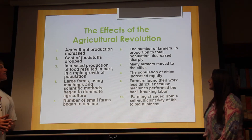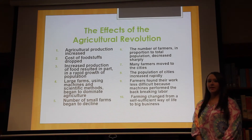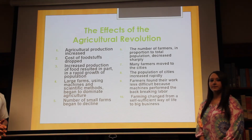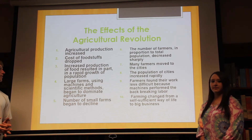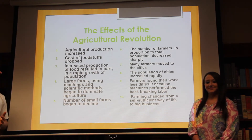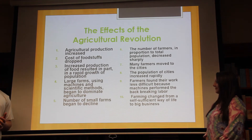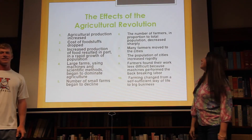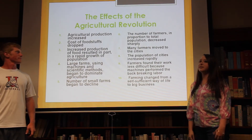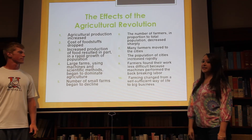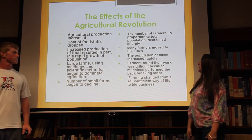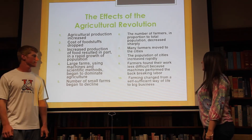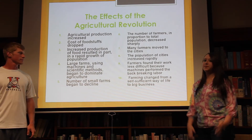The effects of the agricultural revolution include: agricultural production increased and the cost of foodstuffs dropped. Increased food production resulted in rapid population growth. Large farms using machines and scientific methods began to dominate agriculture, while the number of small farms began to decline. The number of farmers, in proportion to the total population, decreased sharply. Many farmers moved to cities, urban populations increased rapidly, and farmers found their work less difficult because machines performed the back-breaking labor. Farming changed from a self-sufficient way of life to a big business.